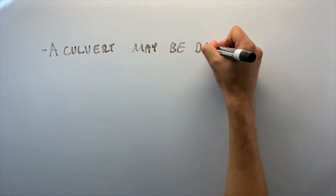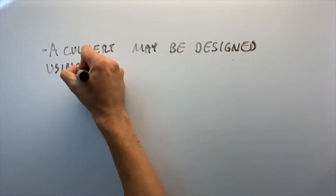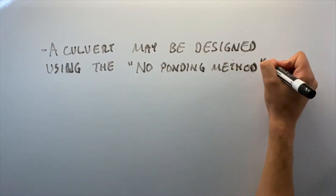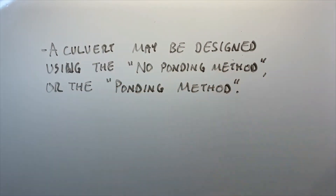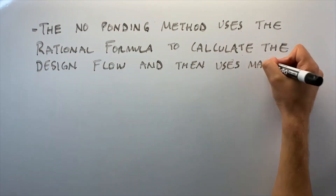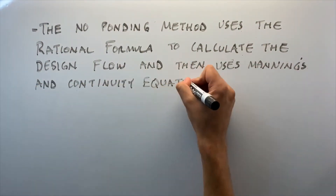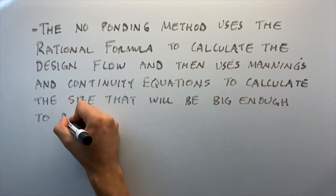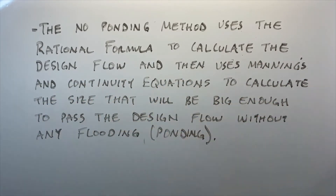A culvert may be designed using a No Ponding method or a Ponding method. The No Ponding method uses the rational formula to calculate the design flow and then uses Manning's and the continuity equations to calculate the size that will be big enough to pass the design flow without causing any flooding or ponding.